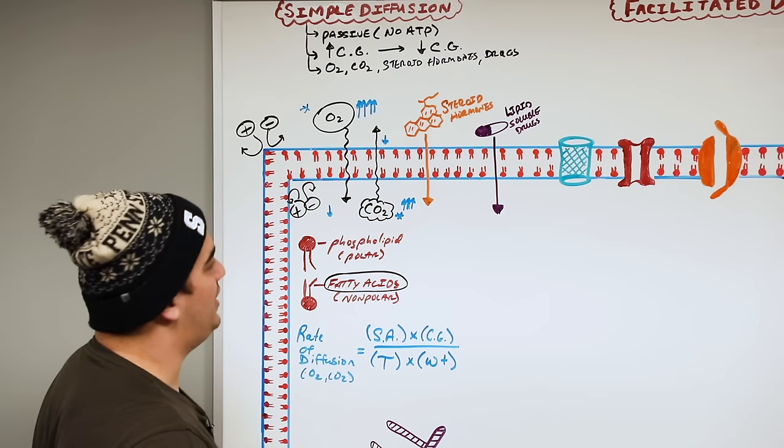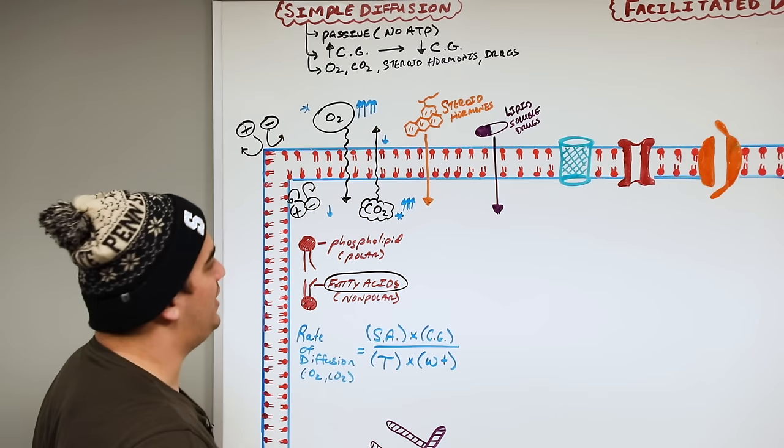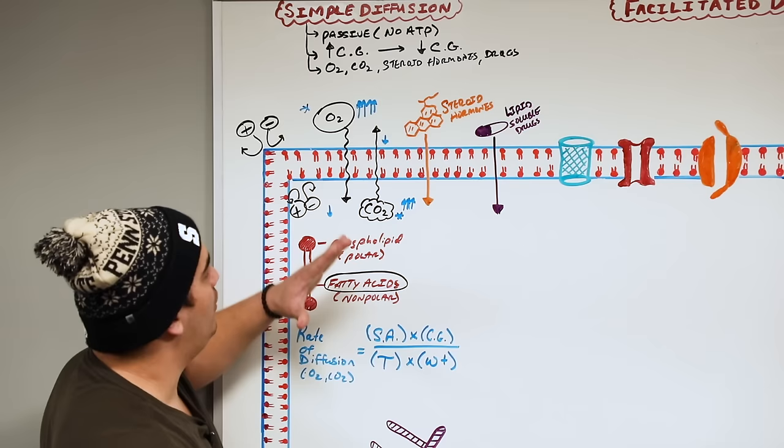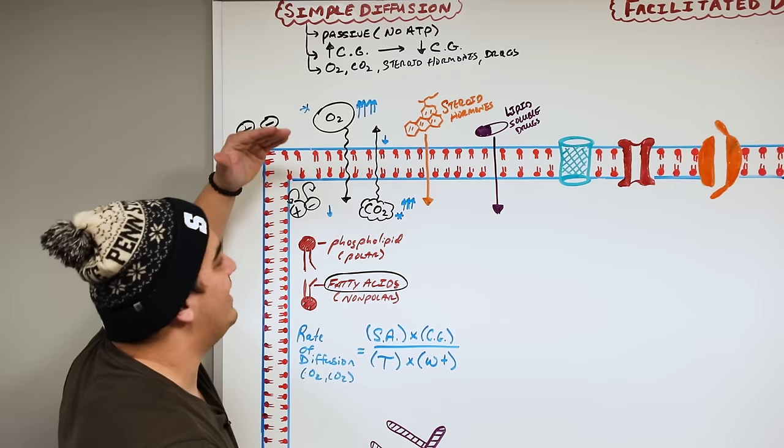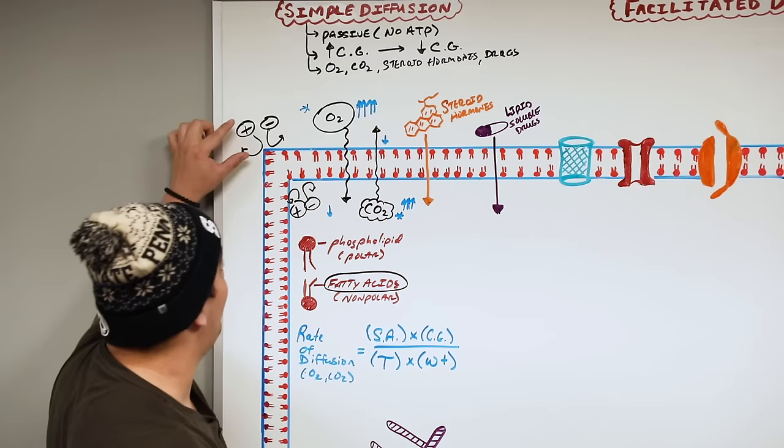To summarize simple diffusion: molecules move across the cell membrane down their concentration gradients. Because they're lipid soluble, nonpolar, and not charged, they can do this without a transport protein. We also know what factors increase or decrease the rate of diffusion.